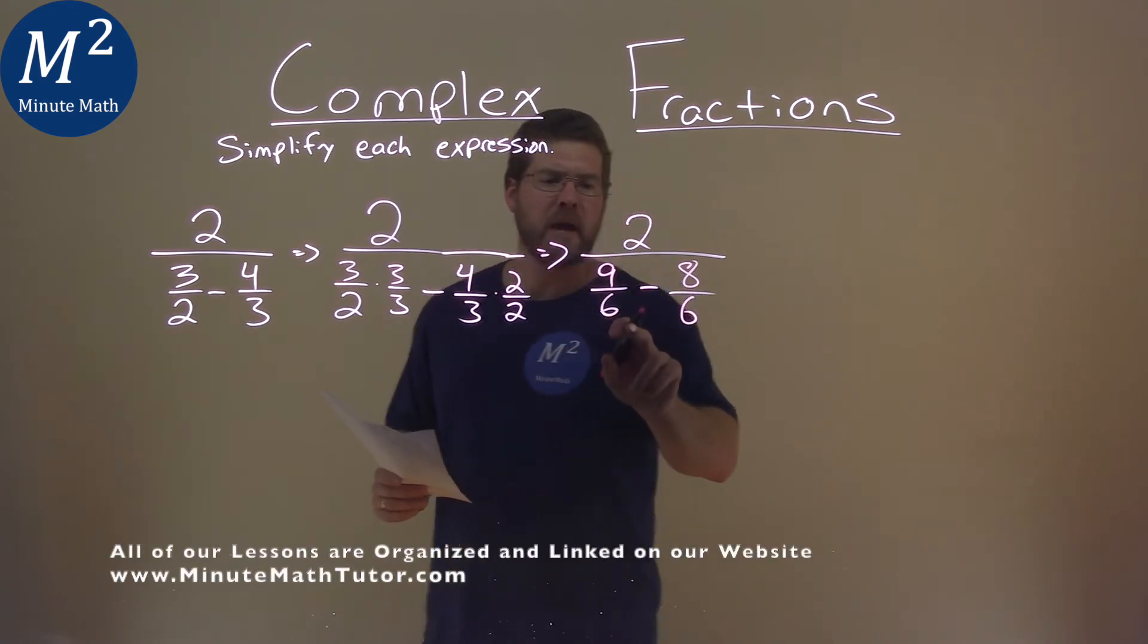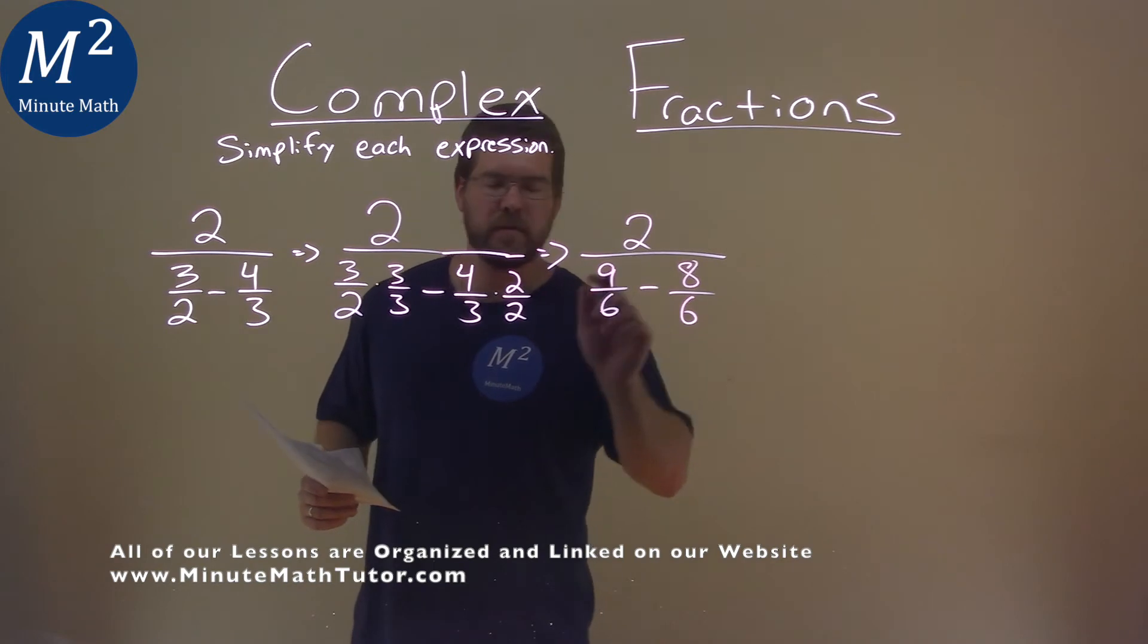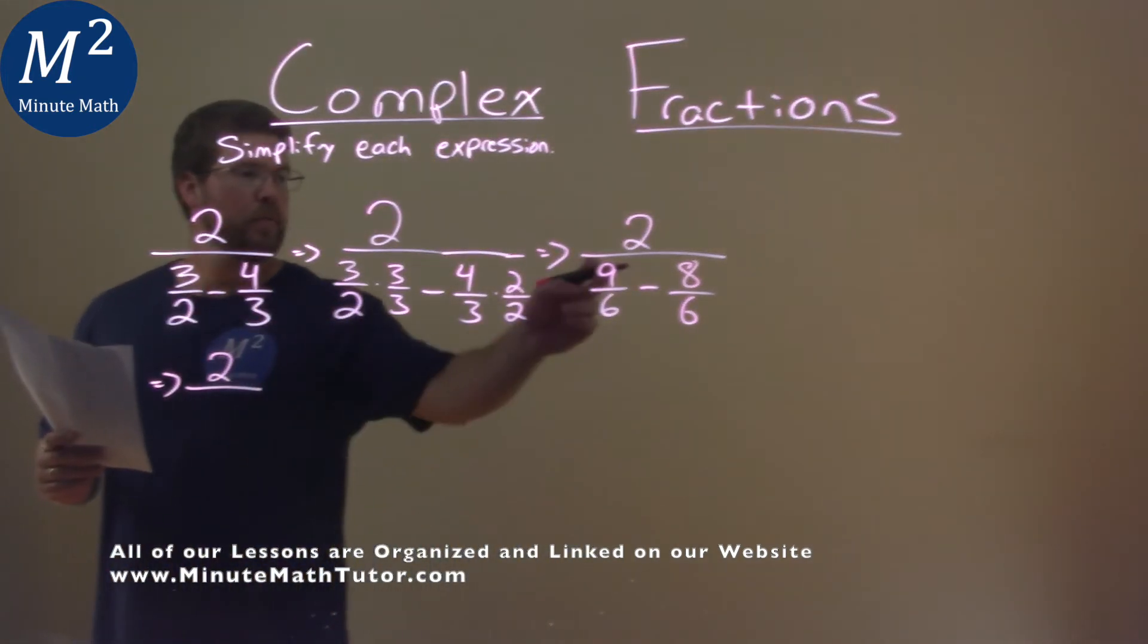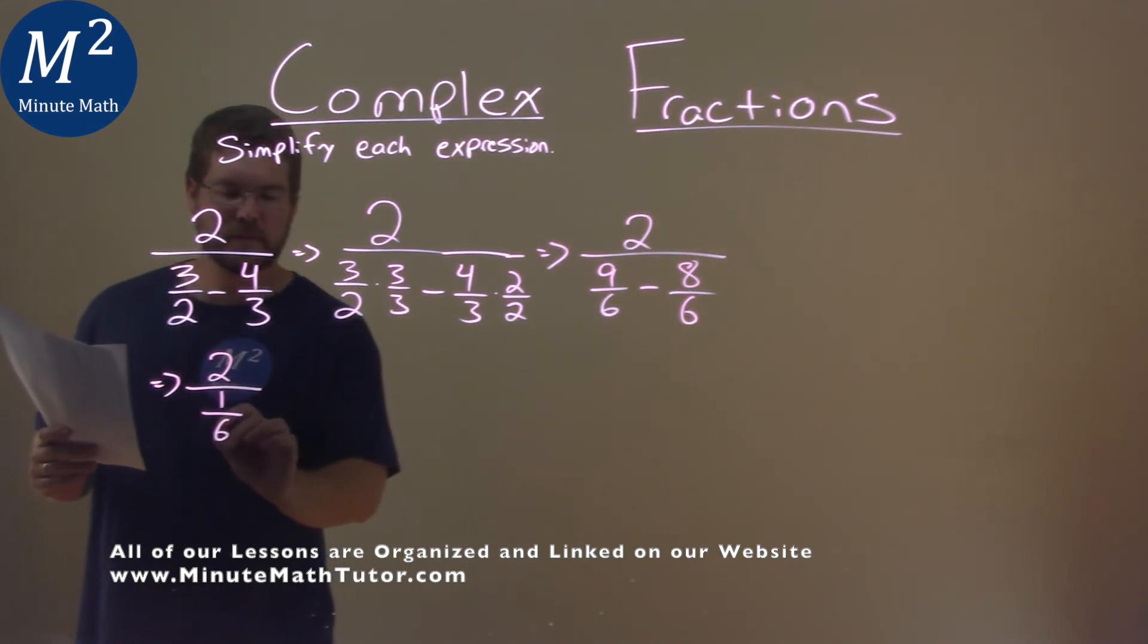From there, we have a common denominator of 6, so we can combine these two. Continuing on, we have 2 over—9 minus 8 is 1—over 6.